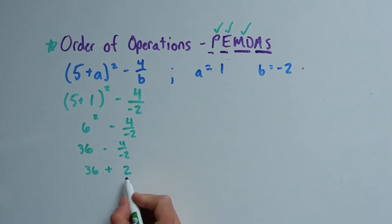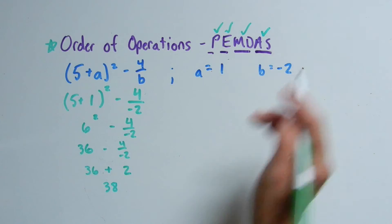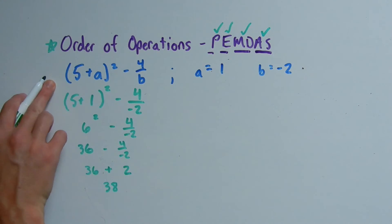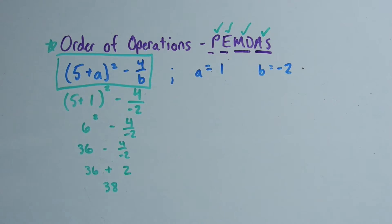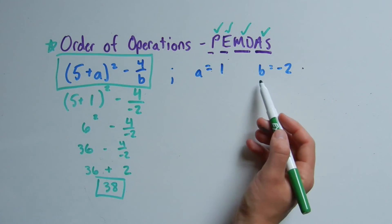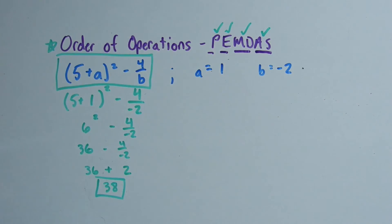36 plus 2 is 38, and we just evaluated our original algebraic expression, 5 plus a squared minus 4 over b. That gave us the answer of 38 when a was equal to 1 and b was equal to negative 2.